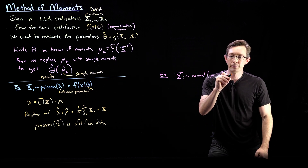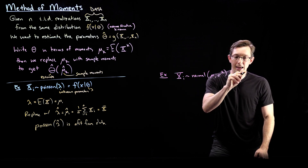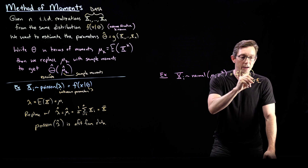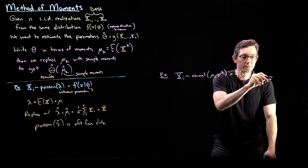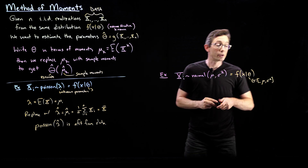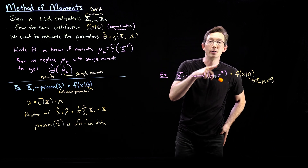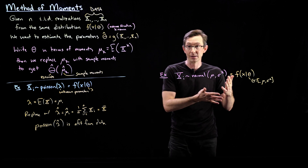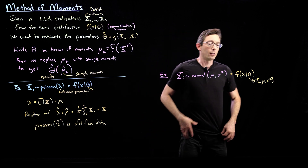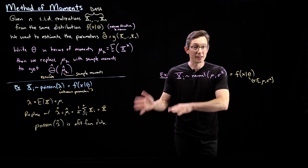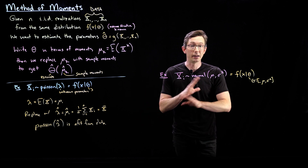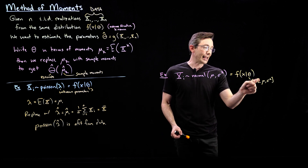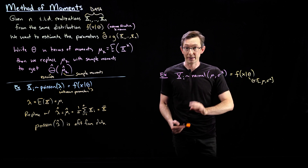This equals f of x given theta, where theta is the vector (mu, sigma squared) — those are the unknown parameters. I don't know mu or sigma squared, but I have data that looks normal, so I'm going to fit mu and sigma squared from that data. We've already looked at this in the context of survey sampling, the sample mean, and the central limit theorem.